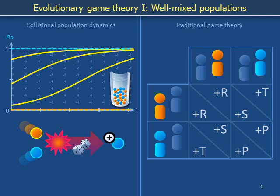This slide deck is divided into two videos. In the first we walk through the collisional population dynamics on the left, and in the second video we walk through a more traditional form of game theory in order to explain how the models on the left and right are connected. This will allow us to explain why the mathematical modeling described on the left is often referred to using the name evolutionary game theory.